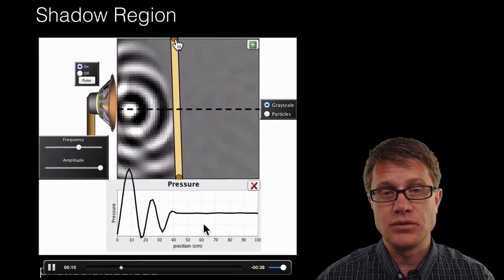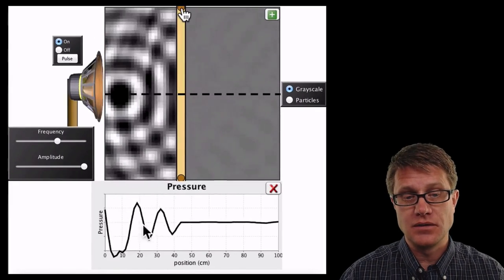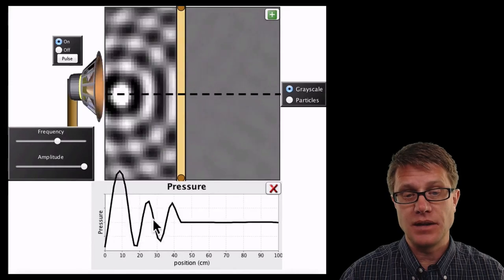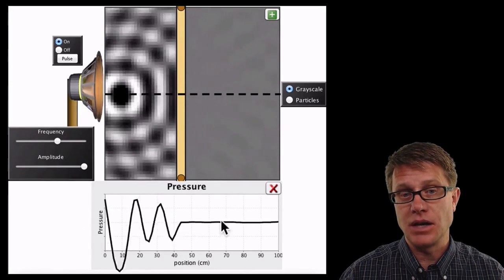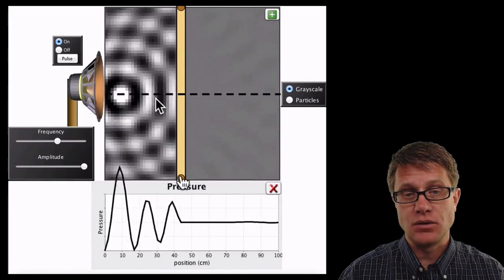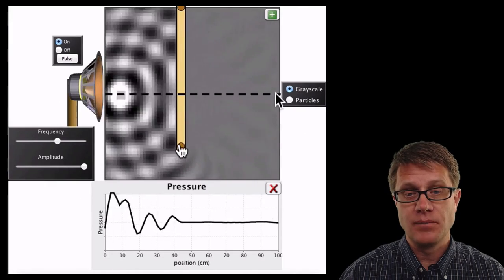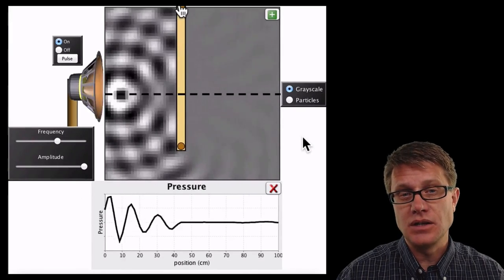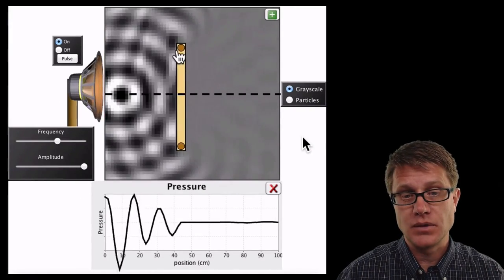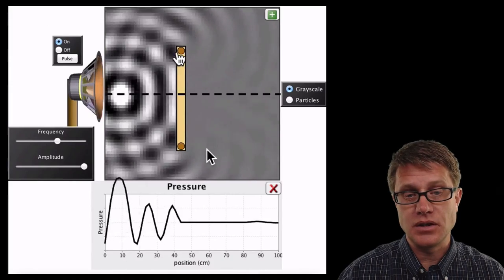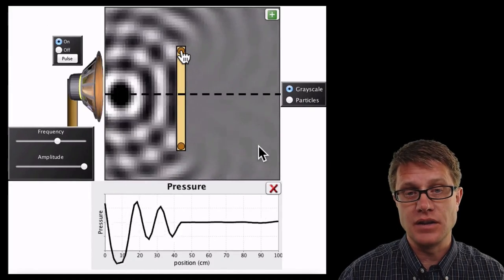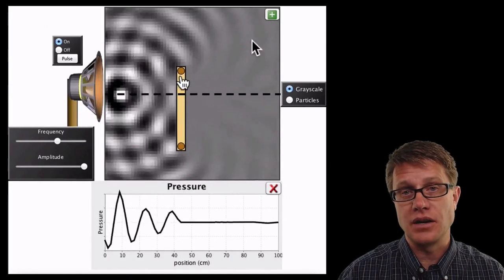And so we are putting a wall between the speaker and the right side. And you can see that there is a lot of sound on the left side, but none of that sound is making it to the right side. Watch what happens as we start to decrease the size of that wall. As we decrease the size of the wall you are starting to see diffraction on this side and more diffraction on that side.